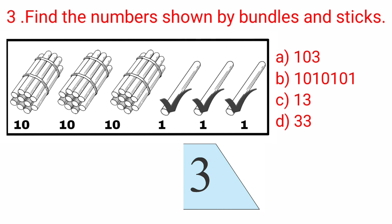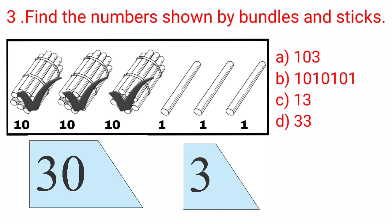We know 10 sticks make a bundle. And 1 bundle has 10 sticks, that is 1 ten. Let's count the number of bundles given in this box. Count with me: 1, 2 and 3. 3 bundles is equal to 3 tens. 3 tens is equal to 30.